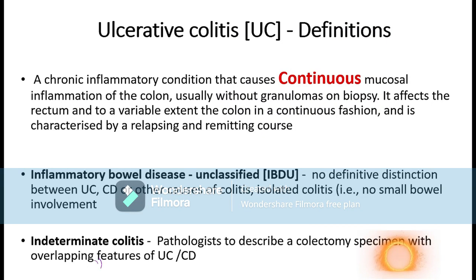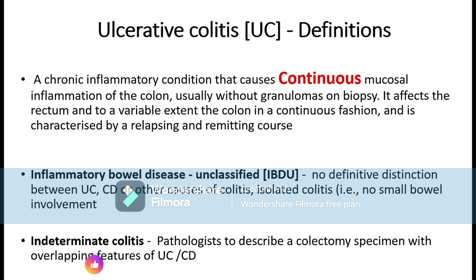Ulcerative colitis is defined as a chronic inflammatory condition that causes continuous mucosal inflammation of the colon, usually without granulomas on biopsies. It affects the rectum and extends into the colon in a continuous fashion, and is characterized by a relapsing and remitting course. Key words to catch in this definition are 'continuous' and that it starts from the anorectal junction and extends proximally.